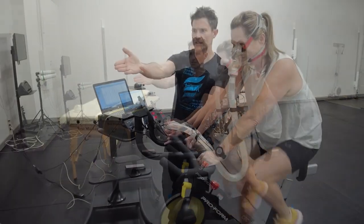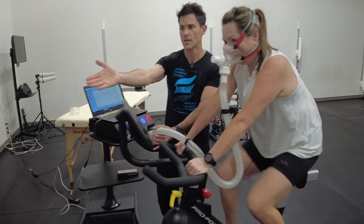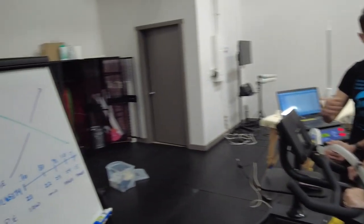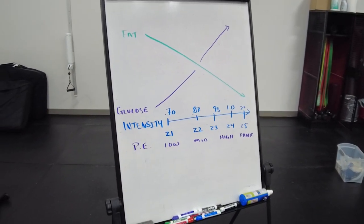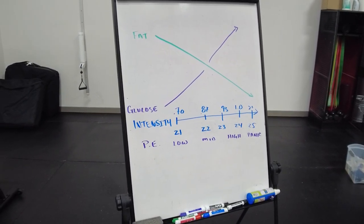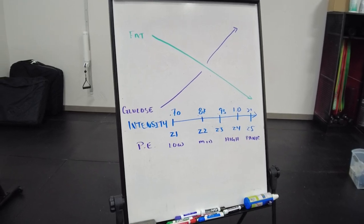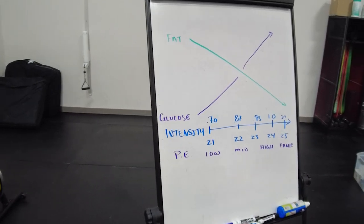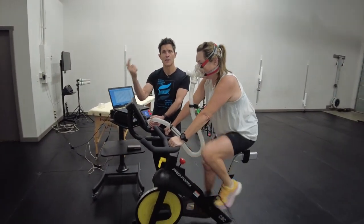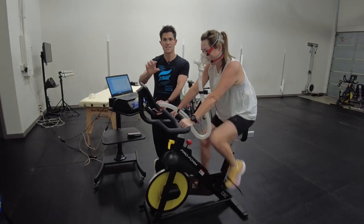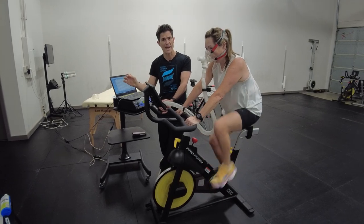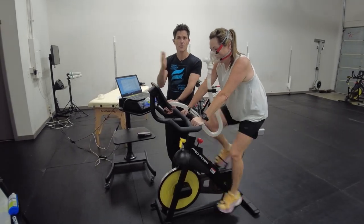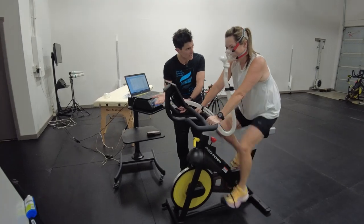When you're working out, you can either use sugars or fats, and you can see that on this board right over here. There's an intensity line, which is defined by work — a cadence, pressure on the pedal, wattage, speed on a treadmill, incline, load, a weighted vest. Work is work. As intensity goes up by increasing speed or load, we see more use of sugar and less use of fat.